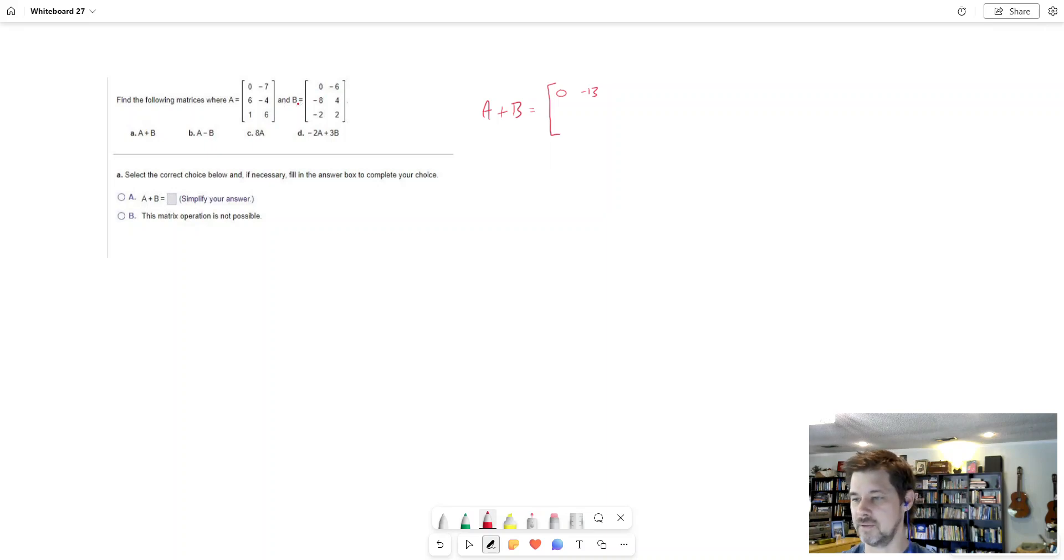Now I just go through and I do that with all of them. I take 6 plus negative 8, that's negative 2. I take negative 4 plus 4, that's 0. I take 1 plus negative 2, that's negative 1. And I take 6 plus 2, and that's 8. And then there's my answer. My answer is the same size matrix as the one I started with. It has two columns, three rows. It'll always work that way. So then in MyMathLab you'd have to take this and use the matrix template to type that in, and that would be your answer.